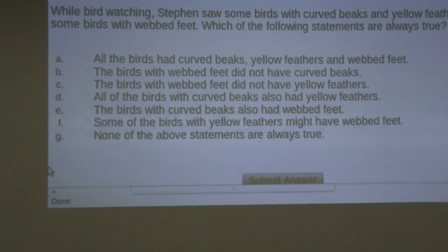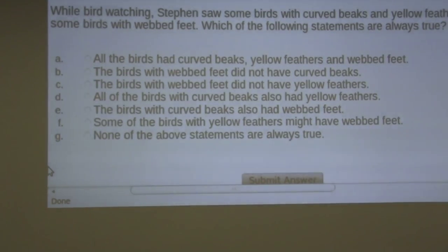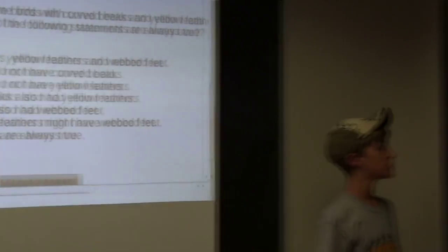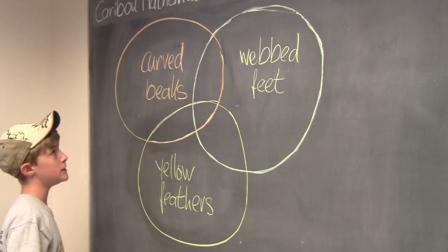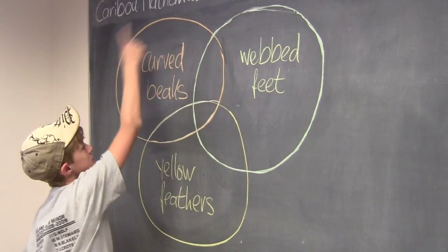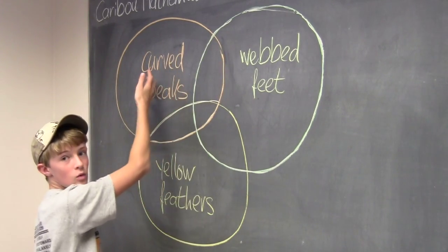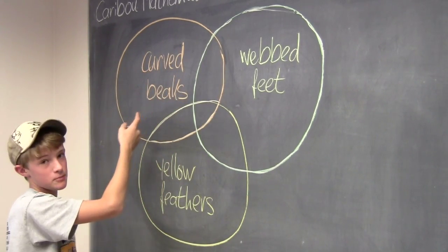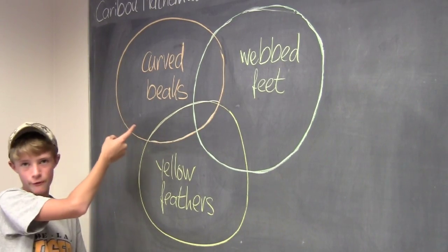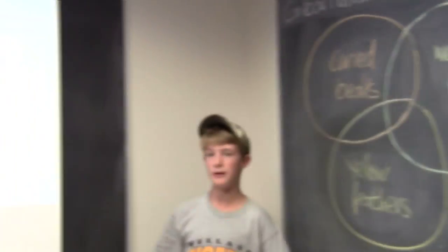Now E. The birds with curved beaks also had webbed feet. So that would be true if this part was not there, because that's a possibility that there's birds with only curved beaks. So E would be false too.